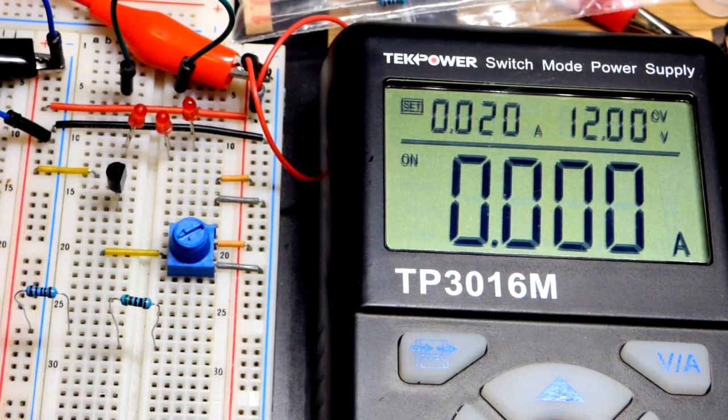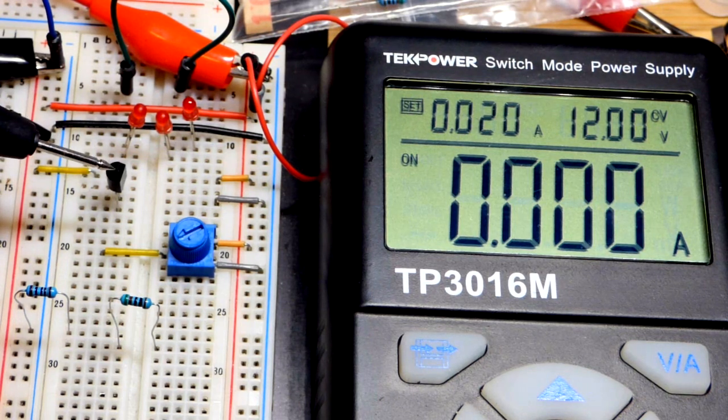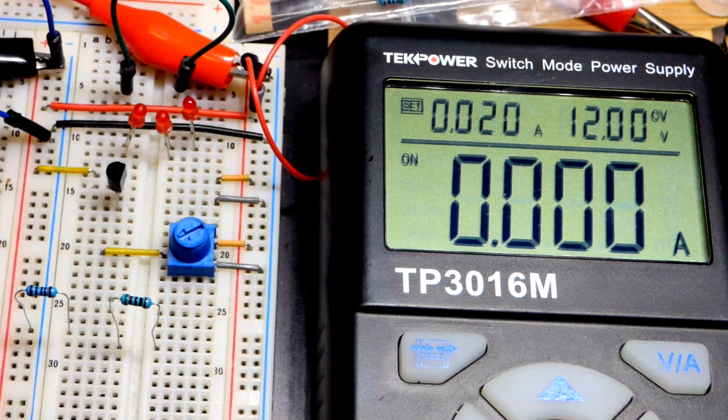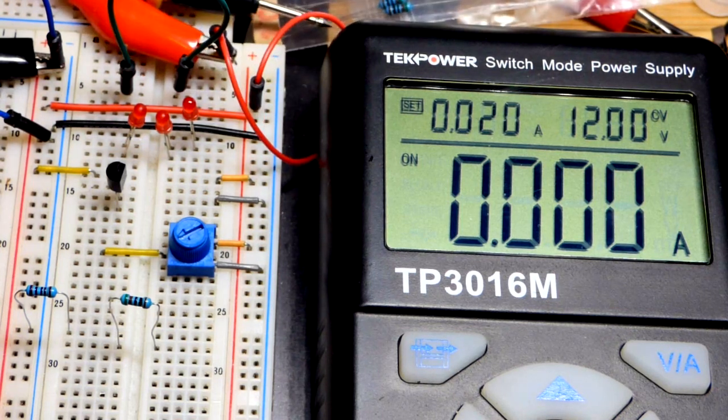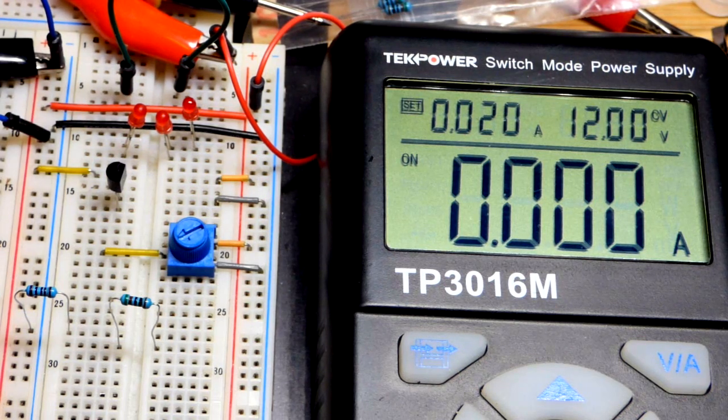So now in this video, we're going to quickly put together a current source using an NPN bipolar junction transistor. So this is the 2N2222, a very common NPN bipolar junction transistor. With this particular circuit, any NPN transistor should work.